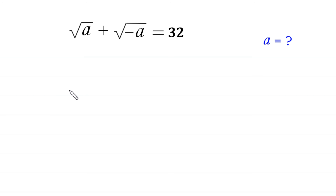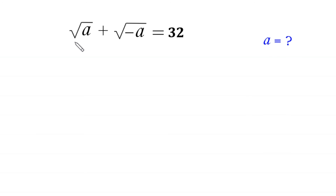Hello everyone, you are welcome. We will solve this very nice radical equation: √a + √(-a) = 32. Our job is to find all possible values of a.